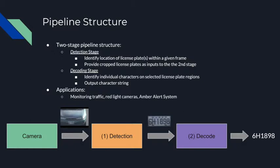The system we implemented was a two-stage pipeline where the first stage is the detection stage, with the task of identifying the location of license plates within a given frame. This is crucial because cameras can be placed at a variety of different angles, so we must train our system to crop the license plates exactly. The second stage, the decoding stage, is tasked with identifying the character string on a given cropped license plate. Applications include monitoring traffic, use as red light cameras, or even as part of the Amber Alert system here in California.